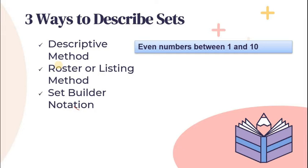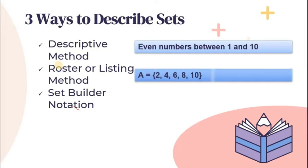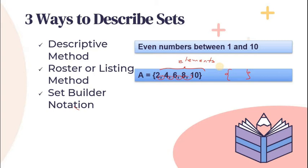Doon papasok ngayon yung tinatawag nating roster or listing method. Now, pansinin na in roster or listing method, we use the braces symbol. And yung comma is very important kasi yun yung magsisiparate sa bawat members, or we call this as elements. Lahat ng mga members na nasa set ay tatawagin nating elements. At bawat element is separated by a comma at sila ay naka-enclosed sa braces.